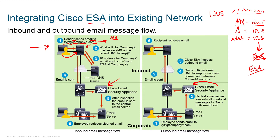Just like with a web server, you point to the outside interface of your firewall, and then your firewall NATs that traffic to the inside. This is going to look very similar, and remember you're going to have a firewall in the mix. In step three, the IP address for Company X's email server — a.b.c.d — which is actually the ESA, is returned to the sending mail server.